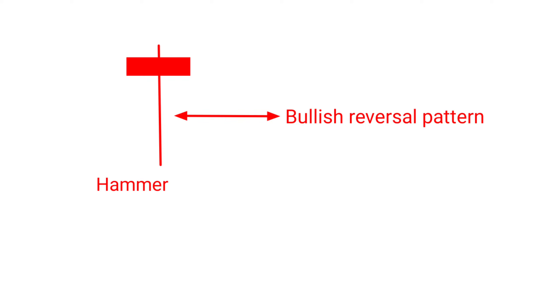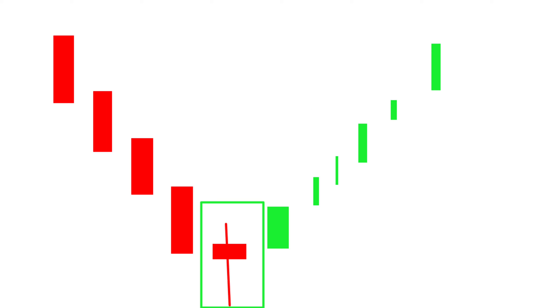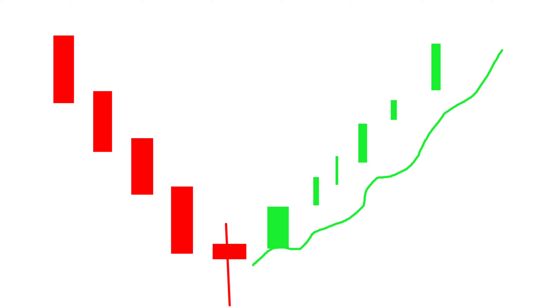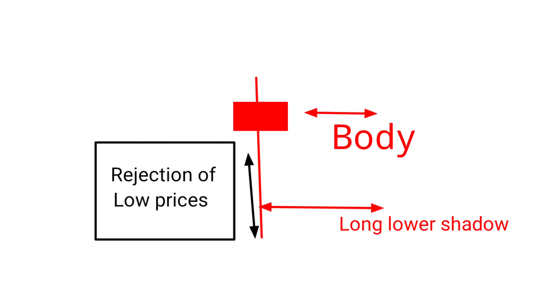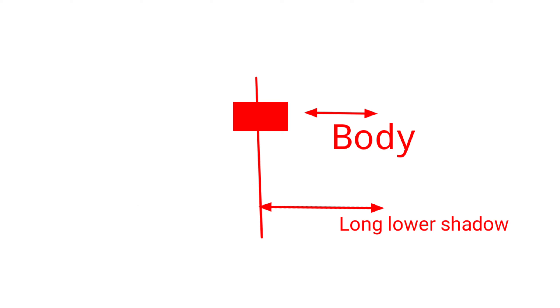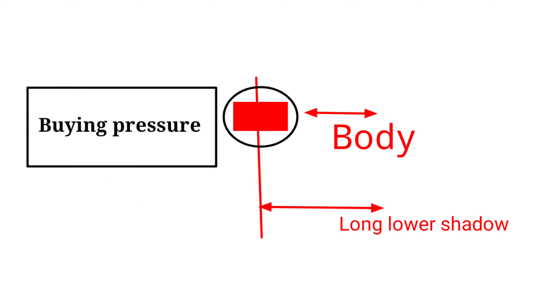The hammer is a bullish reversal pattern that forms at the bottom of a downtrend, signaling a potential trend reversal to the upside. The hammer has a long lower shadow and a small real body, typically red or black. The long lower shadow represents the rejection of low prices and the small real body represents the buying pressure overcoming the selling pressure. This pattern shows that the bulls are taking control of the market and are likely to push prices higher.